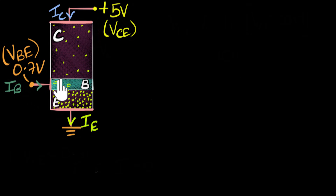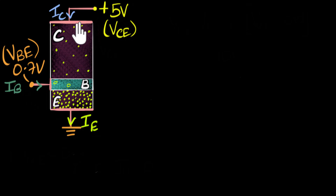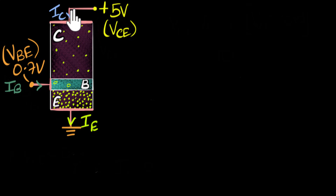The best way to understand these behaviors is to look at a practical circuit. The difference between this circuit and a practical one is that a real circuit would have some resistors. We include the resistors to limit the current so that the current won't increase a lot and our transistors won't blow up. So let me introduce a resistor here, and I'm also going to replace this schematic figure with the circuit symbol of a transistor.